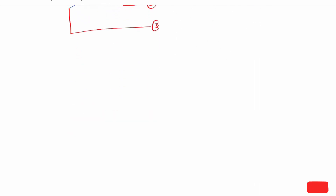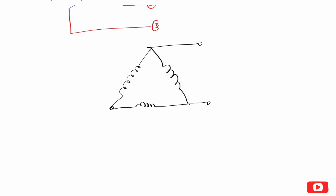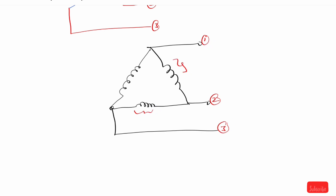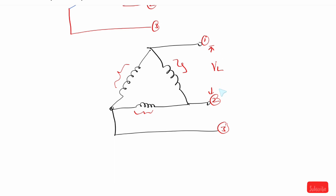Now, what we do is delta. We add to delta connection. So, this is delta connection. This is the line and this is the phase. So, in delta the line voltage is equal to phase voltage.